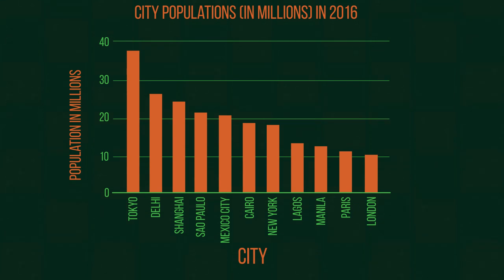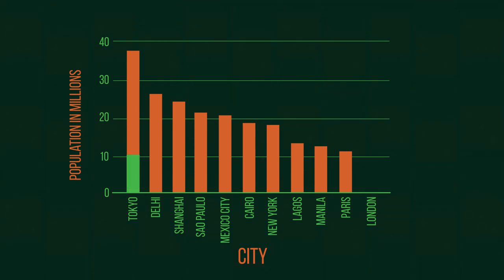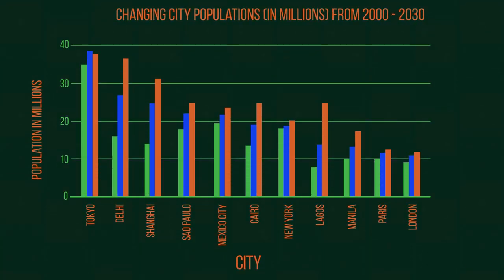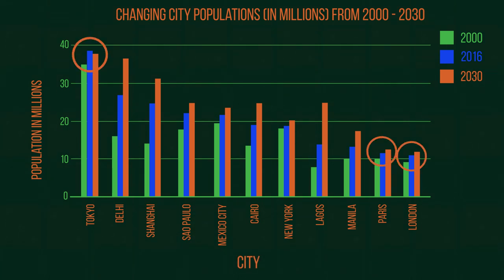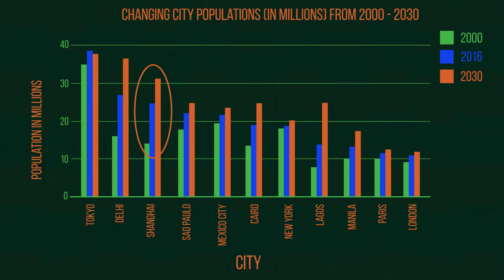Looking at this bar graph, we can now easily compare the populations of these cities in 2016. It clearly shows us that London is about one quarter the size of Tokyo. Or we could even have all three years on one bar graph and compare the changes. We can easily see that some cities have only had a small population change, whereas other cities like Shanghai have a much larger change.